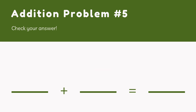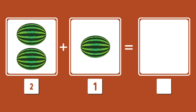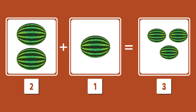Now I have got some watermelon. I have got two watermelons on the left and one watermelon on the right. How many watermelons do I have? I have got three watermelons.